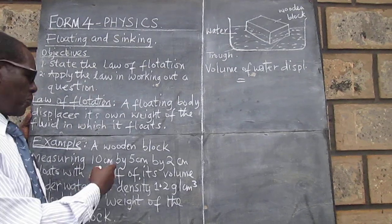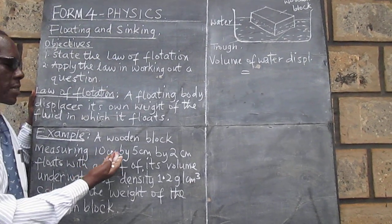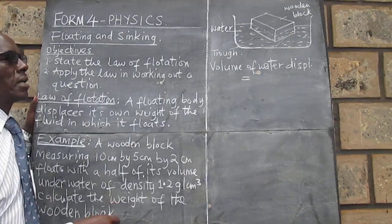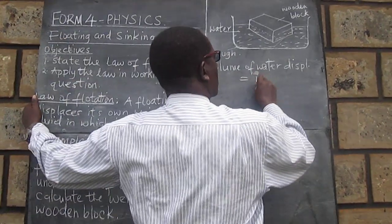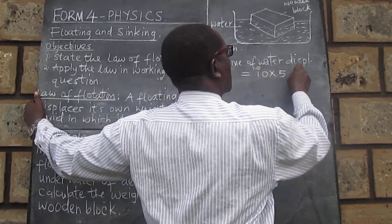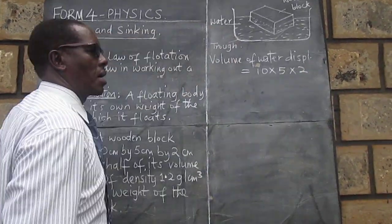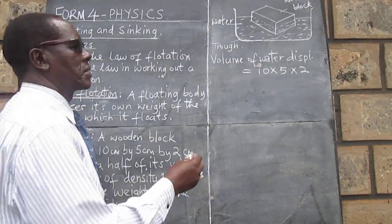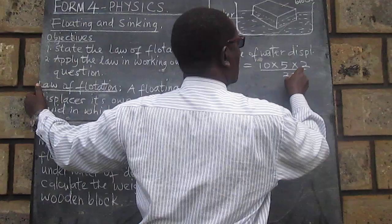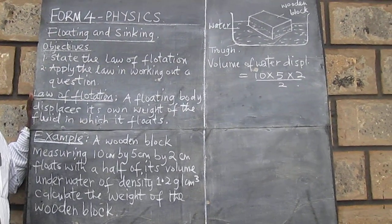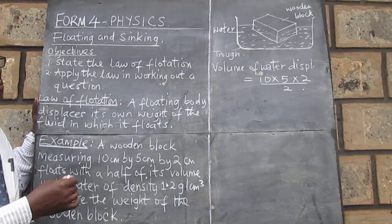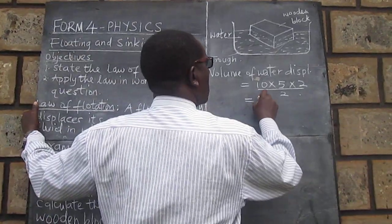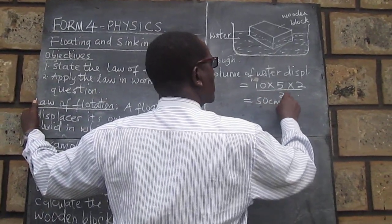So volume, we can use the formula for volume, length times width times height. And therefore, it's going to be 10 by 5 by 2. And because we are told it's a half, then we are going to divide this by 2. So we work out that and we get 50 cubic centimeters.